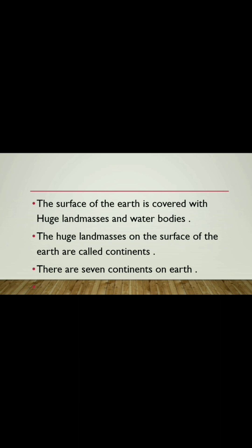The surface of the Earth is covered with huge land masses and water bodies. The huge land masses on the surface of the Earth are called continents. The land portion of the Earth is 29% and water covers 71% of the Earth's surface. These huge pieces of land, or land masses, on the surface of the Earth are called continents.